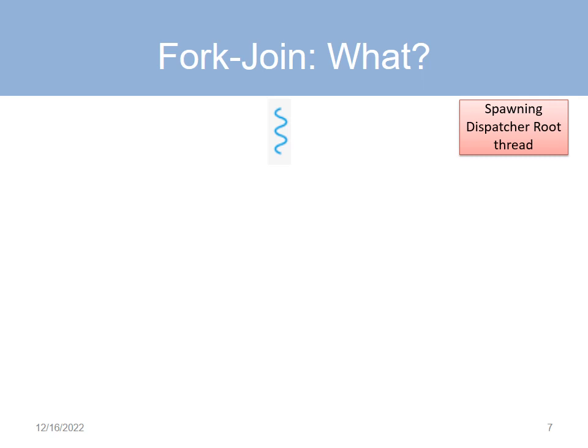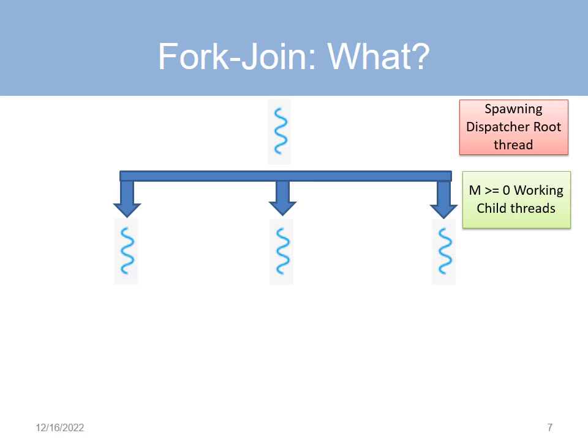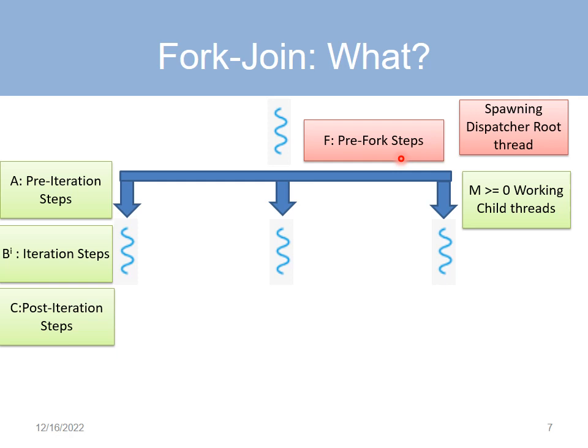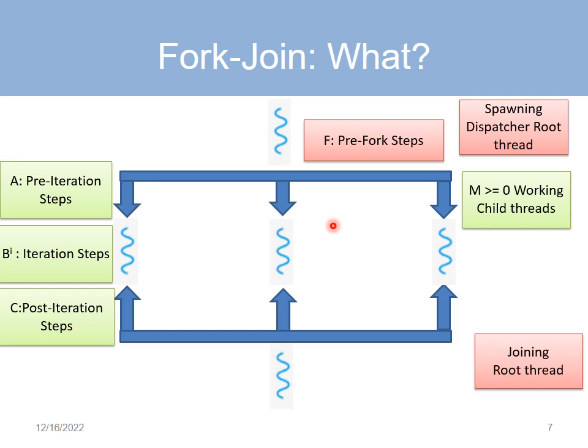Here's a model that worked for us. It assumes that there's a root thread that spawns a bunch of child threads. The root thread is a dispatcher thread — it doesn't do the real work, which is done by the child threads. Before it spawns these threads, it takes a sequence F of pre-fork steps. Each child thread I takes a sequence BI of iteration steps, preceded by a sequence A of pre-iteration steps and followed by a sequence C of post-iteration steps. The root thread waits for all children to die, joins the threads, and executes a sequence J of post-join steps.